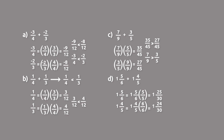Since 1 and 25 thirtieths is greater than 1 and 24 thirtieths, we know that 1 and 5 sixths is greater than 1 and 4 fifths. Alternatively, we could convert to improper fractions and then compare, but we'd essentially be doing the same thing with bigger numerators. Since the whole number parts are equal, we really just need to compare 5 sixths and 4 fifths directly.